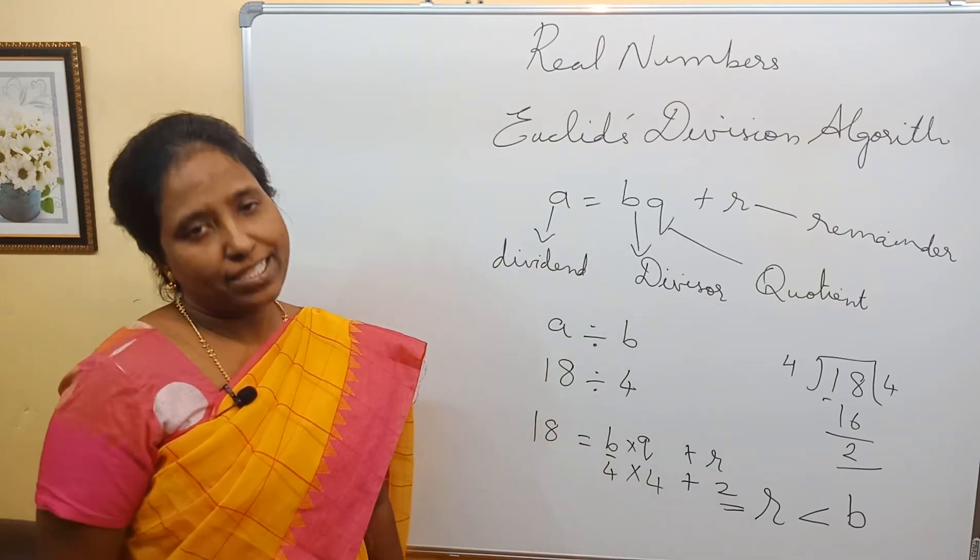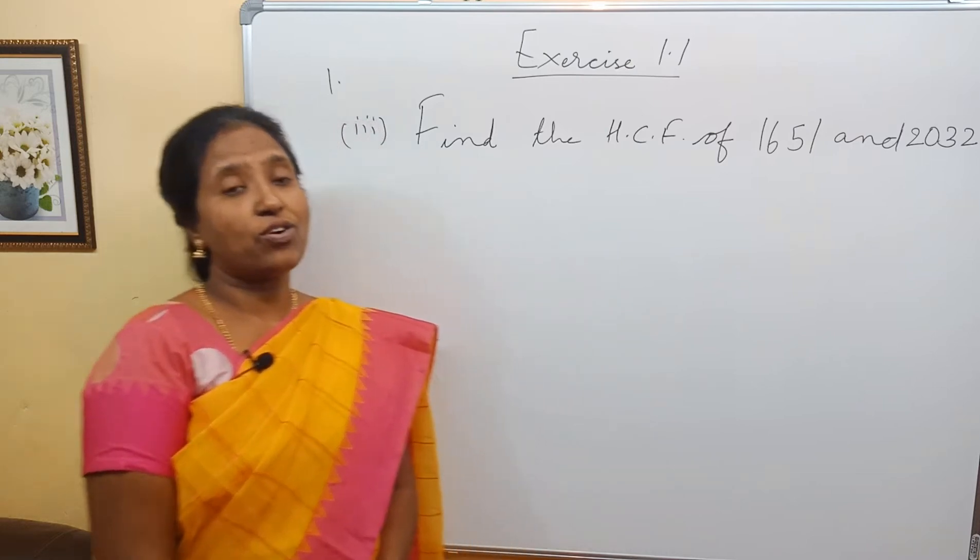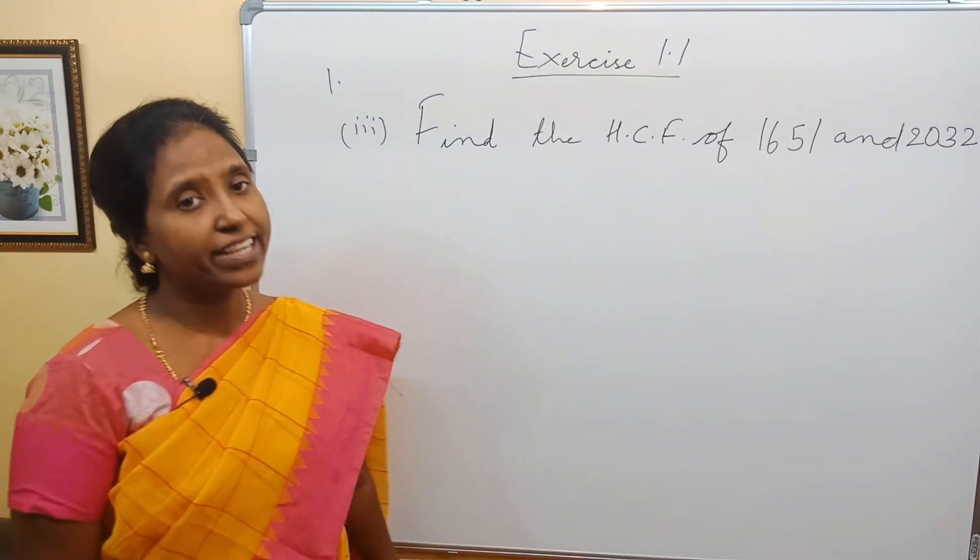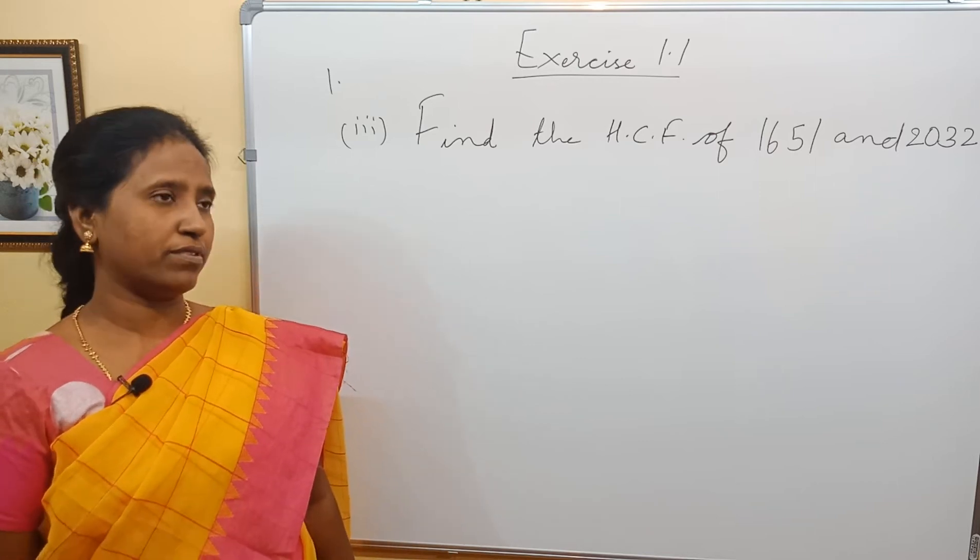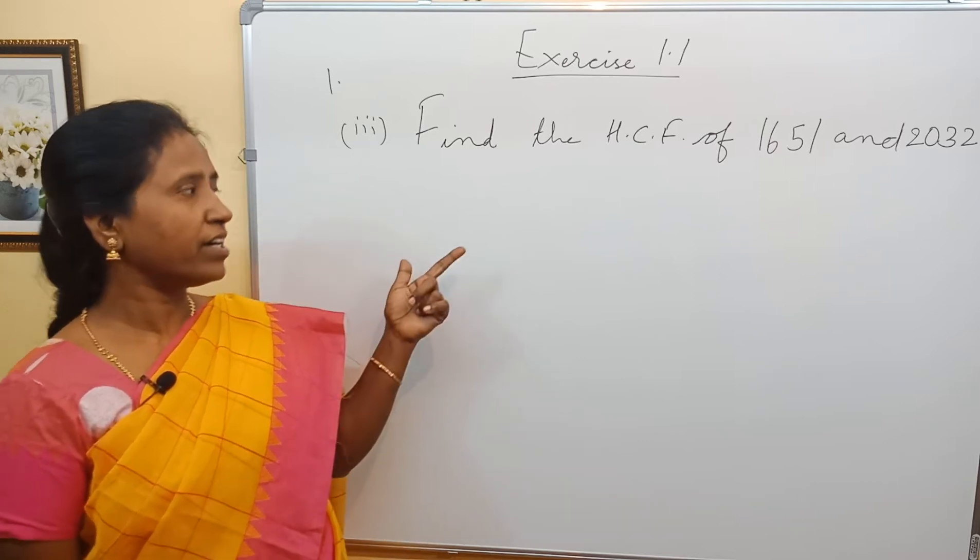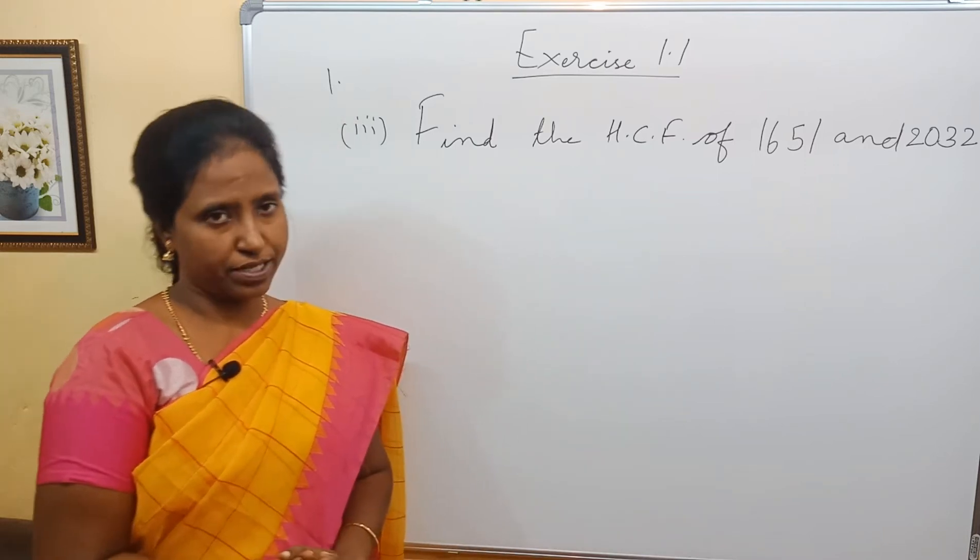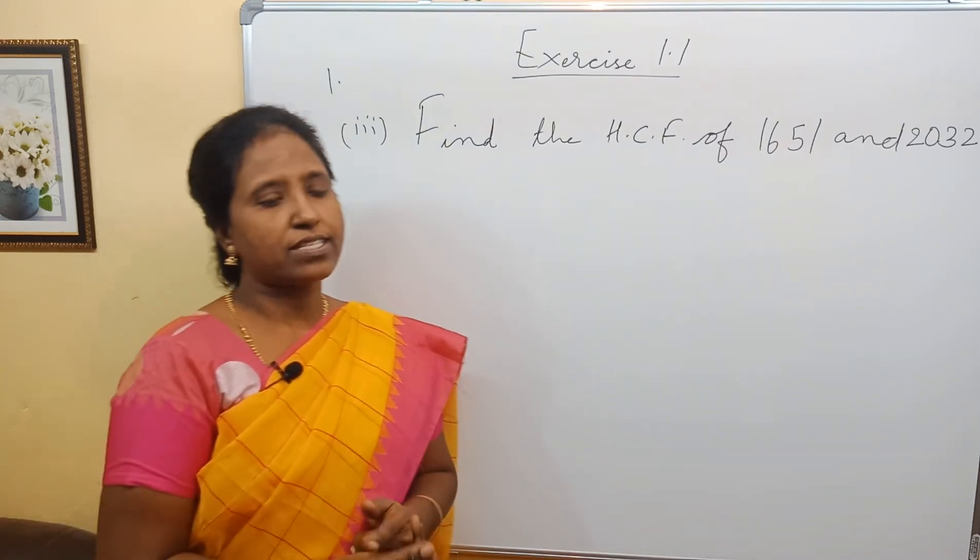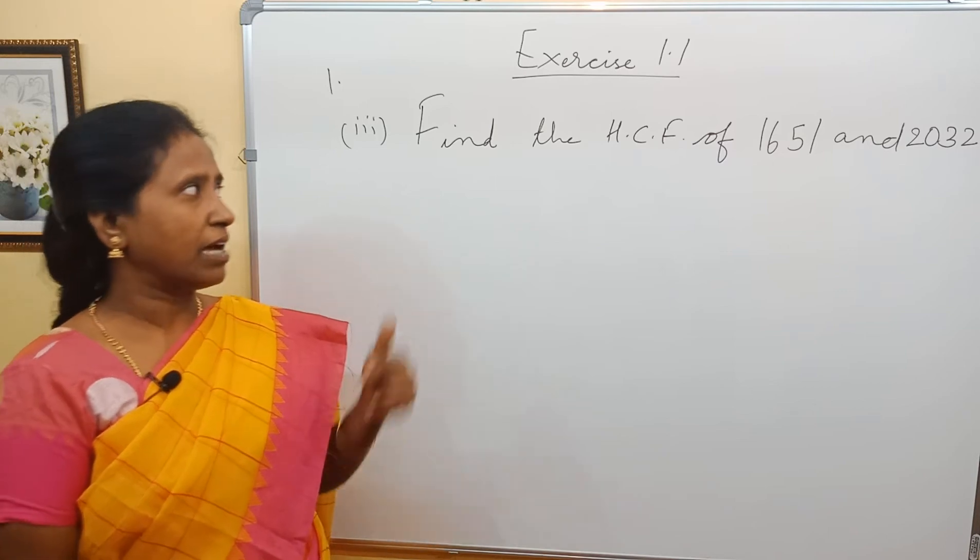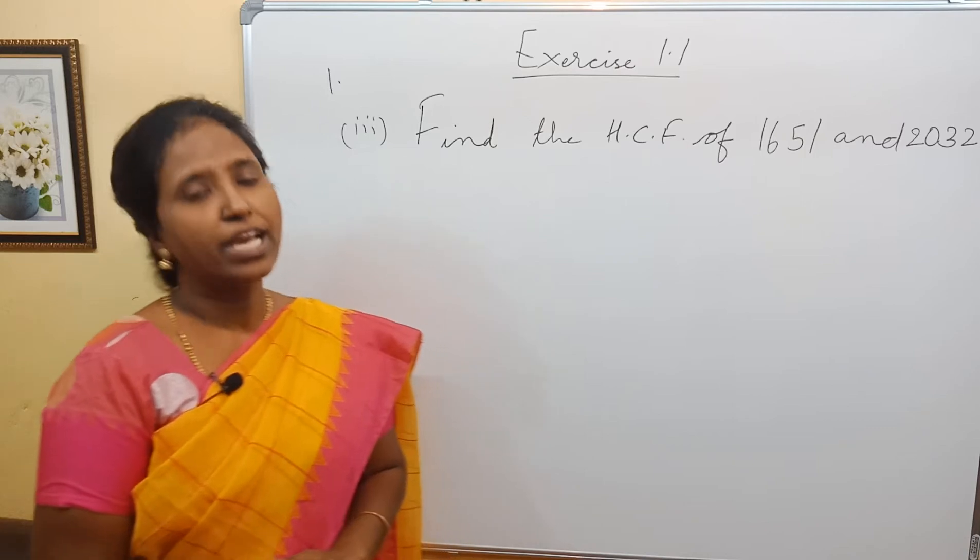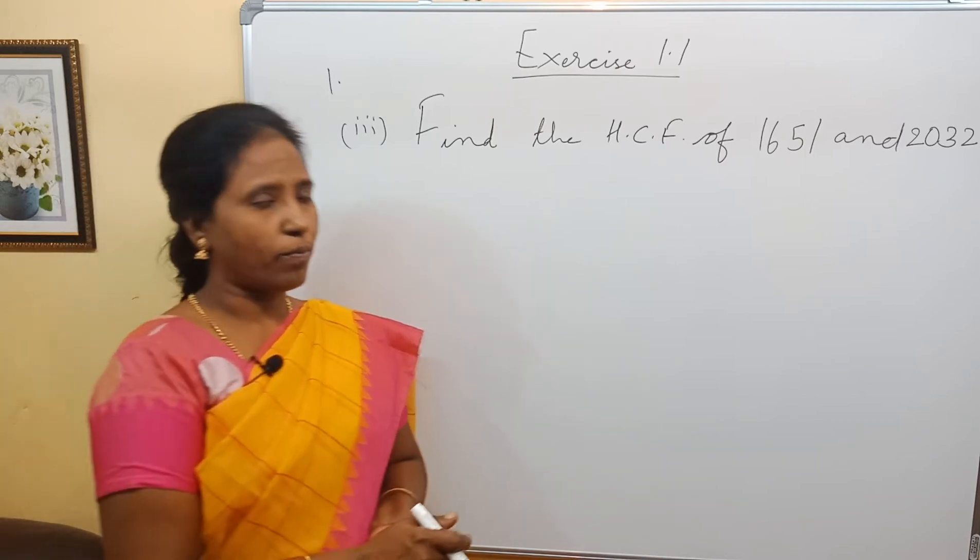Now let's get into the exercise in the textbook. One of the applications of this Euclid's division algorithm is to find the HCF of two numbers. Here I would like to solve the last sum of each bit. For the first bit of exercise 1.1, the sum is find the HCF of 1651 and 2032.